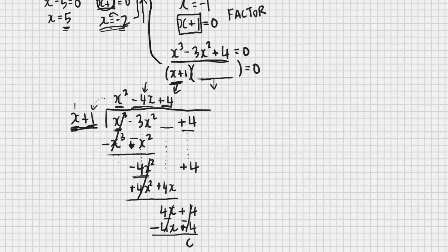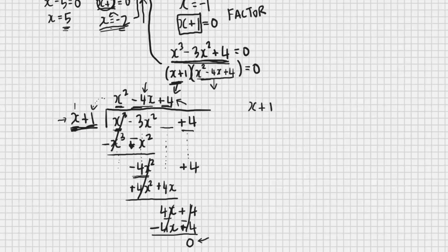Getting remainder 0 confirms x plus 1 is indeed a factor. If I didn't get 0, I'd have made an algebra mistake somewhere, since I know for sure this factor divides in with no remainder. The second factor found from the long division is x squared minus 4x plus 4. So this factorisation method — finding a root by trial and error, using the factor theorem to create a factor, then doing long division — lets me factorise a left-hand side that couldn't be factorised any other way.